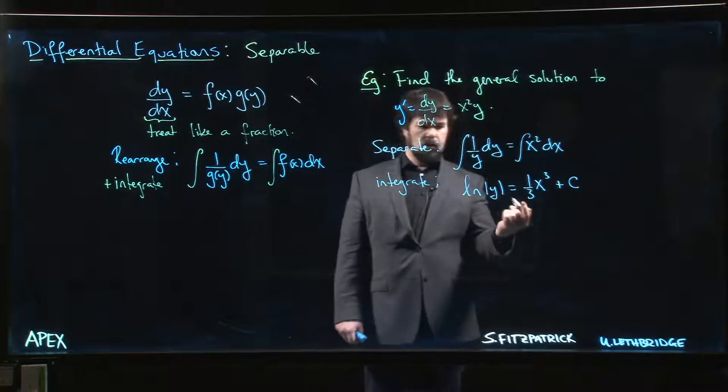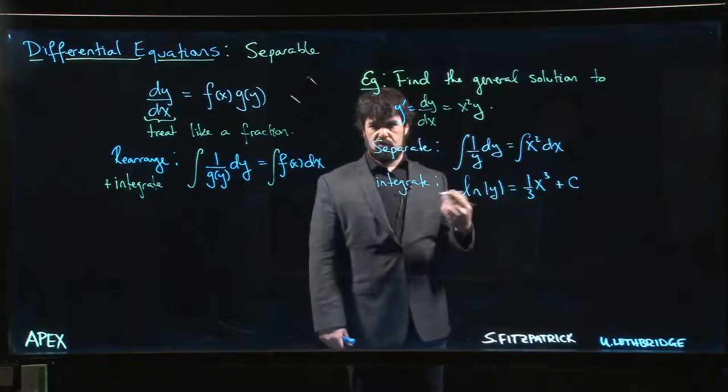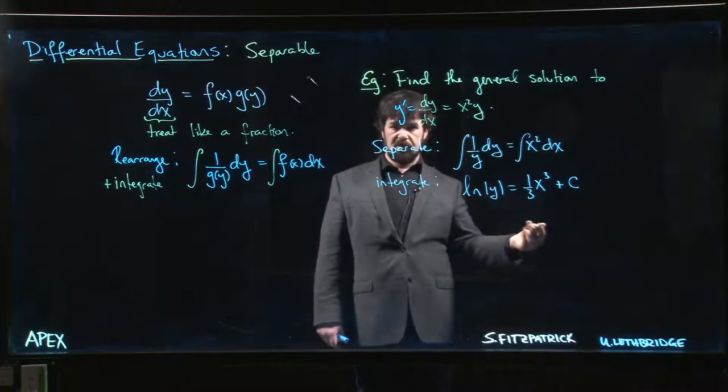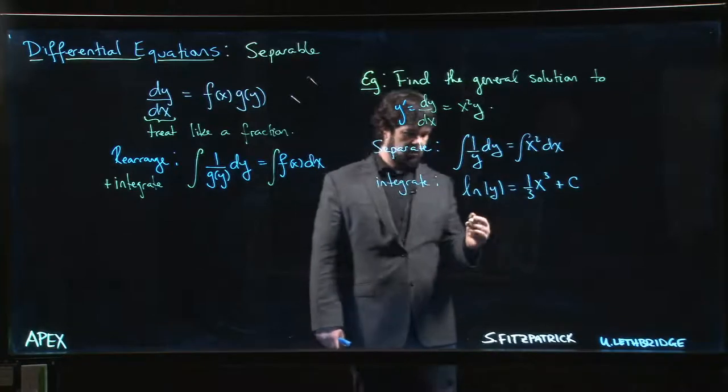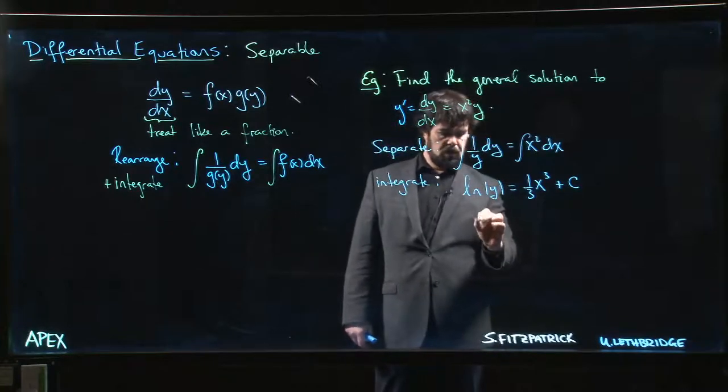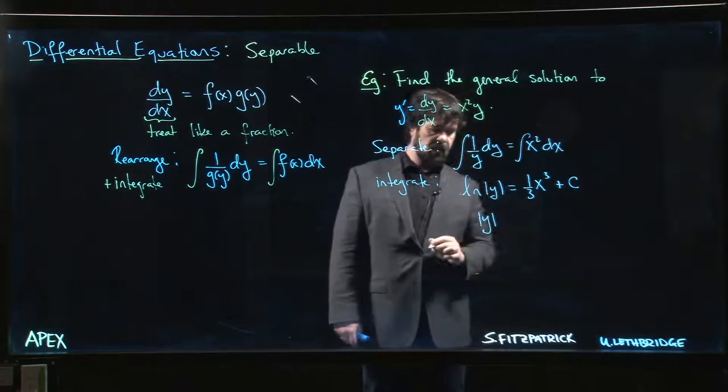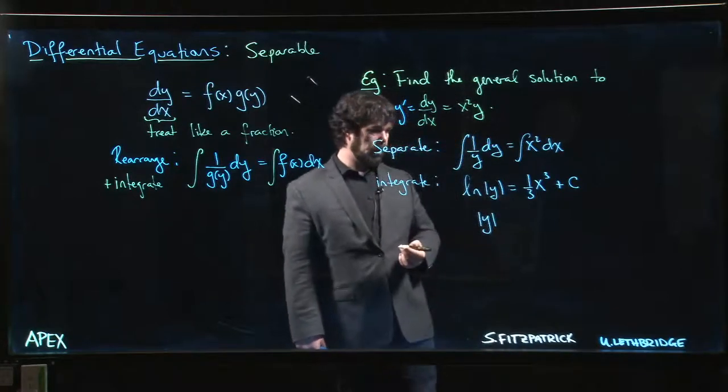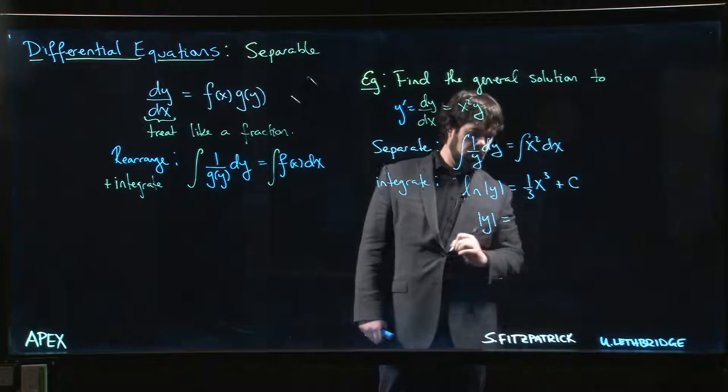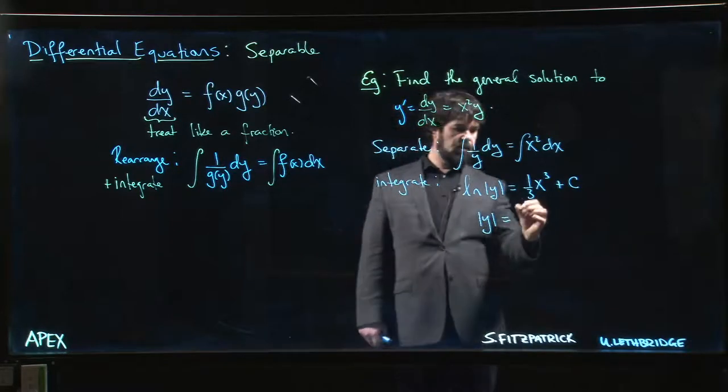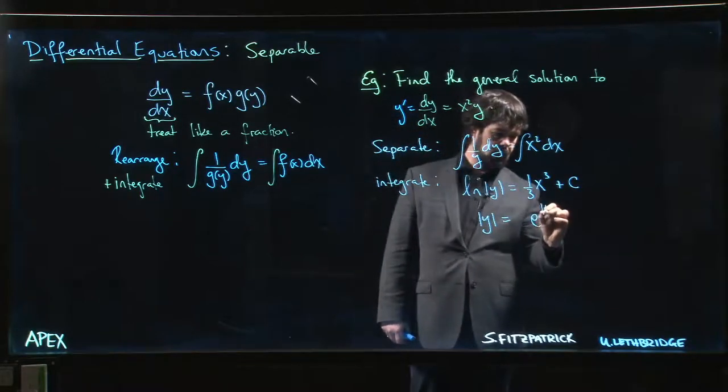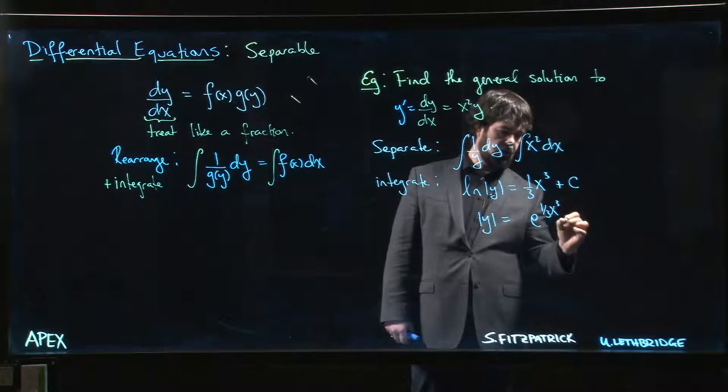So to solve for y, typically if you can solve for y you should. It's okay sometimes to leave implicit solutions, but if you can get explicit it's typically better. I mean we could argue that technically we should take absolute value of y here, and then on this side we're going to have e to the 1/3 x cubed plus some constant.